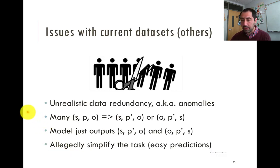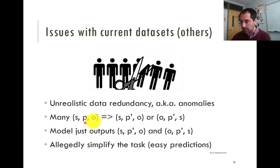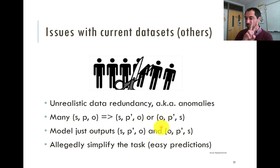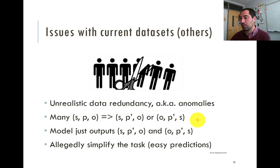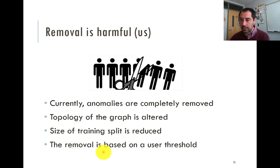Regarding anomalies, there are issues with current datasets used for link prediction. One anomaly is unrealistic data redundancy: many triples of the type subject-predicate-object have another predicate where they are the same or inverse, meaning the same subject-object or reversed. A model that always predicts these patterns is considered to be handling an easy predicate. So these anomalies allegedly simplify the task — though we'll see that's not actually the case.